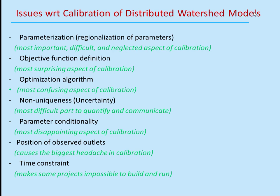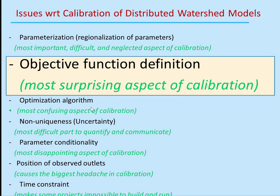When I give presentations, I talk about different issues with respect to calibration of distributed watershed models — issues that need more research. These include parameterization, objective function definition, optimization algorithm, non-uniqueness, parameter conditionality, and so on. With respect to objective function, which is the topic of our talk today, I always say this is the most surprising aspect of calibration.